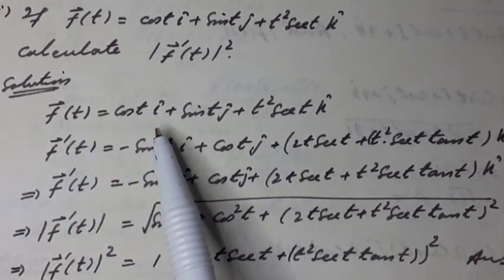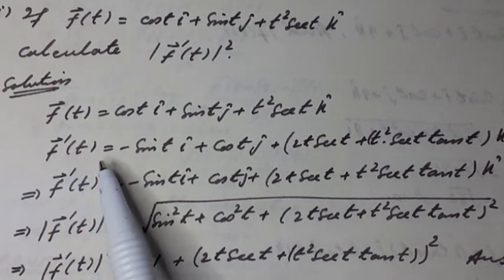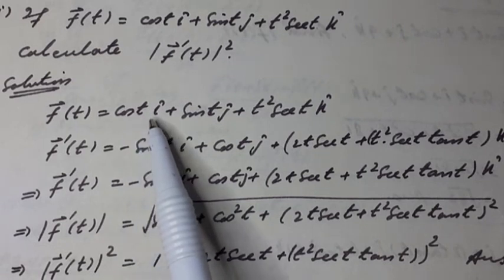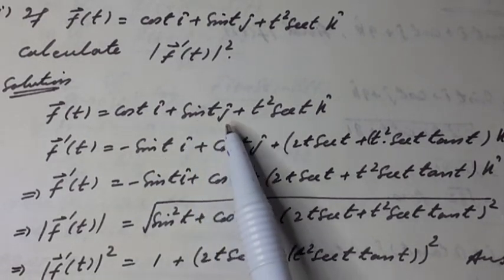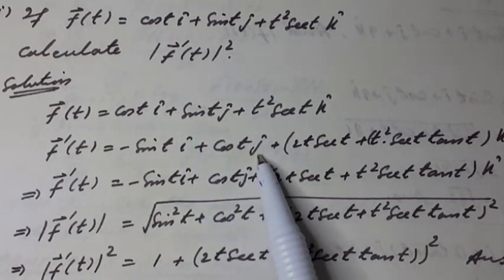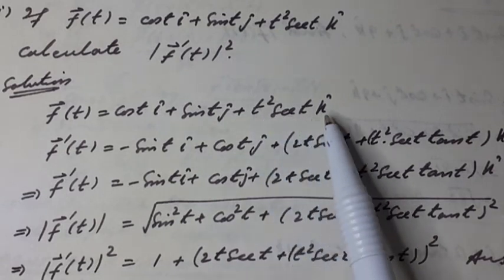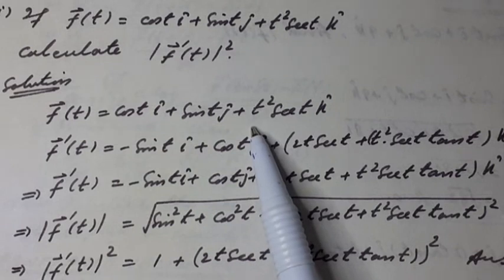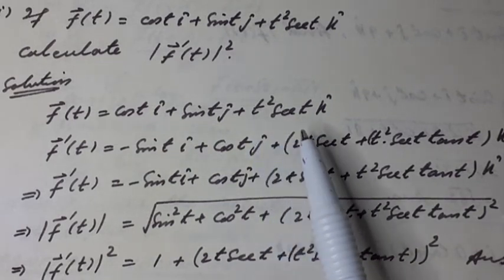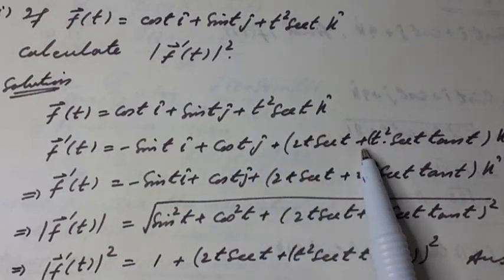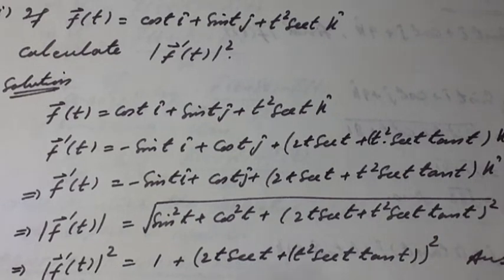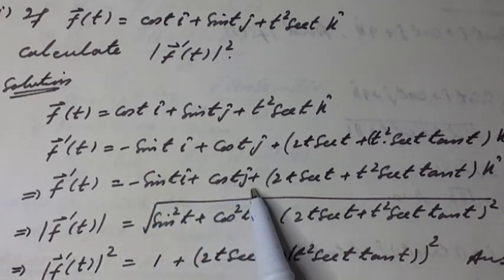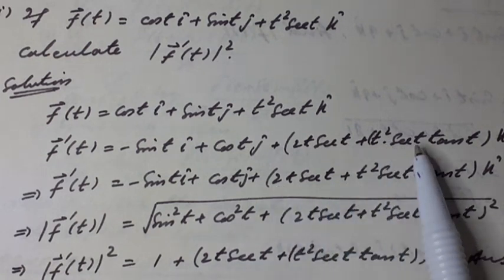Differentiating with respect to t, we have f'(t) equal to: derivative of the coefficient of î — cos(t) gives −sin(t) î — plus derivative of the coefficient of ĵ — sin(t) gives cos(t) ĵ — plus derivative of the coefficient of k̂. Let u = t² and v = sec(t). Using the product rule: derivative is 2t·sec(t) + t²·sec(t)·tan(t). So f'(t) = −sin(t) î + cos(t) ĵ + (2t·sec(t) + t²·sec(t)·tan(t)) k̂.